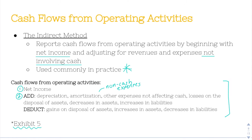You're also going to add back losses on the disposal of assets — it's not an actual cash loss, so we add it back. And then the two most important parts that people tend to mix up: you add decreases in assets, and you add increases in liabilities.